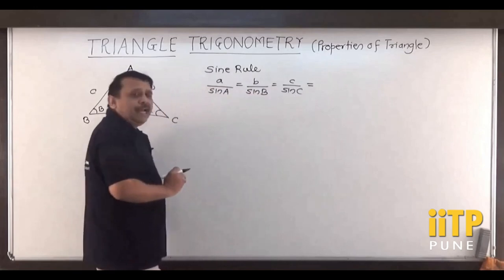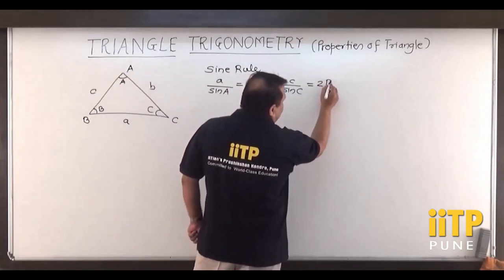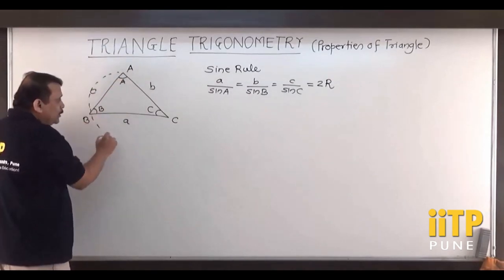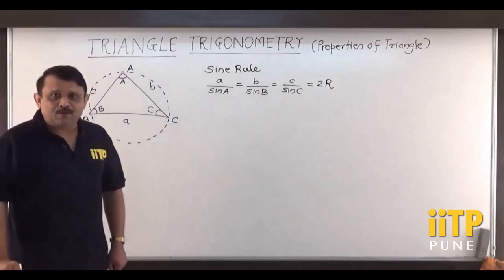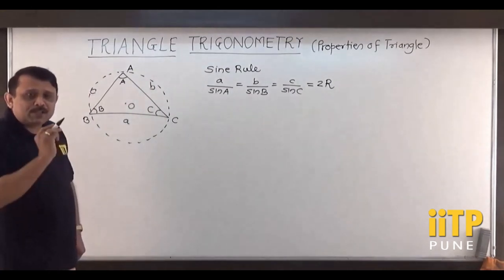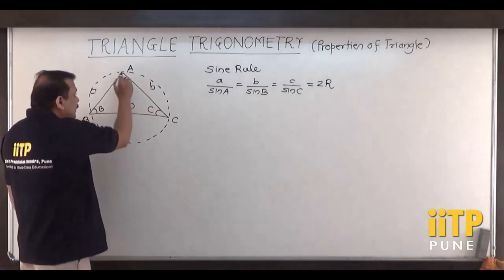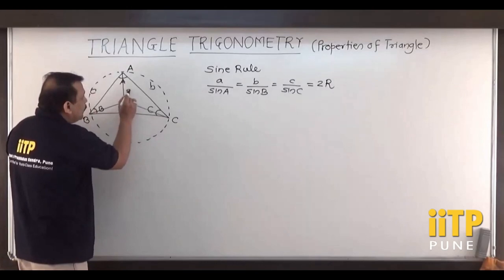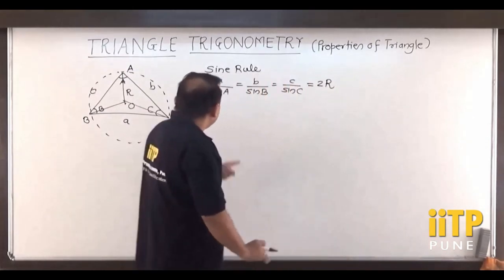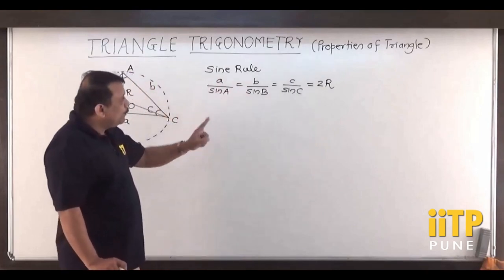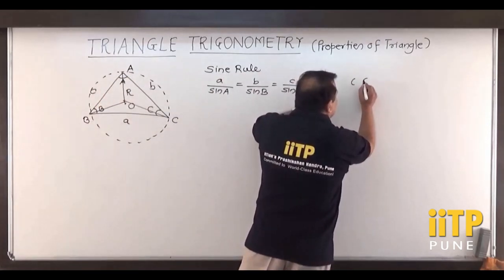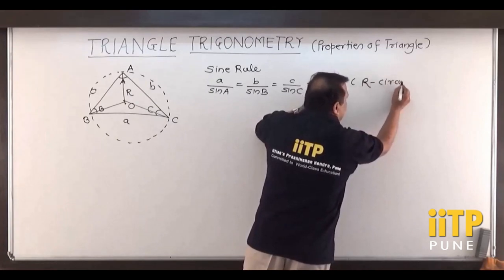This proportionality constant is equal to 2R, where R is the circumradius of triangle ABC. That means we can draw one circle passing through the vertices of triangle ABC. If we take O as the center of this circle — the circumcenter — then OA, OB, and OC are each equal to R, the circumradius. So the Sine Rule is: a/sin A = b/sin B = c/sin C = 2R, where R is the circumradius.